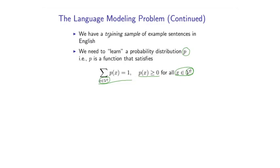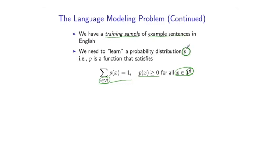So our task is going to be to take a training sample of example sentences as input and output some function p as the output of this process. So here are some examples. We might, for example, assign the probability 10 to the minus 12 to the sentence composed of just the word the followed by stop. We might assign 2 times 10 to the minus 8 to this particular sentence and so on. We just assign a probability to every sentence in the language.